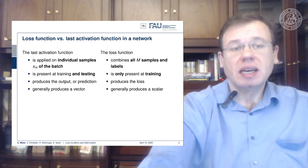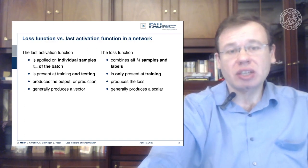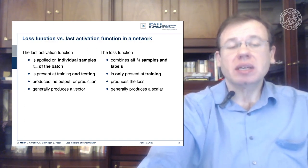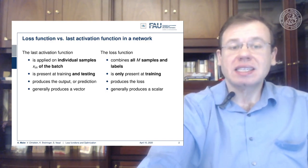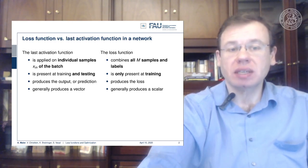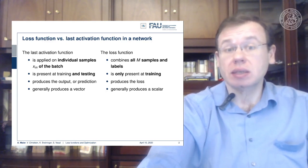We talked about activation functions—last activation, softmax, cross-entropy loss—and somehow we combined them. Obviously there's a difference between the last activation function in our network and the loss function, because the last activation function is applied on the individual samples xm of each batch and it will also be present at training and testing time. The last activation function will become part of the network and remain there, produces the output or prediction, and generally produces a vector in vector space.